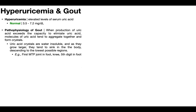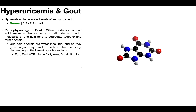What is the pathophysiology of gout? When the production of uric acid exceeds the capacity to eliminate it, molecules of uric acid tend to aggregate together and crystallize. So if we're in a state of hyperuricemia and making more uric acid than we're able to eliminate, that positive balance means we start building up more and more molecules of uric acid.